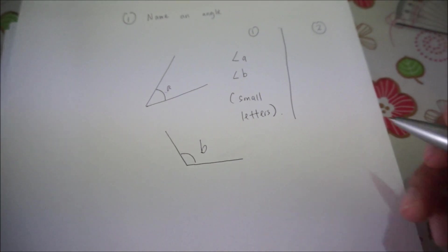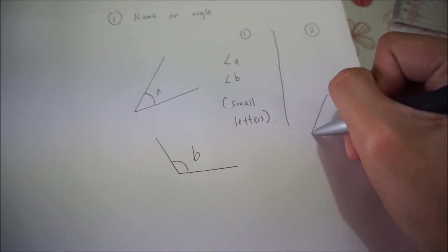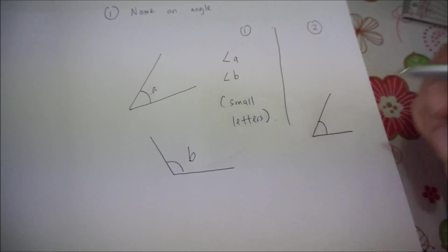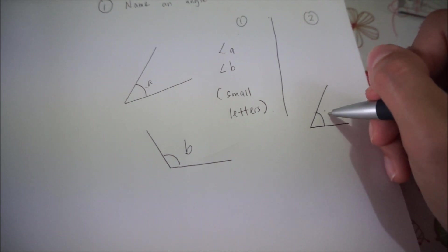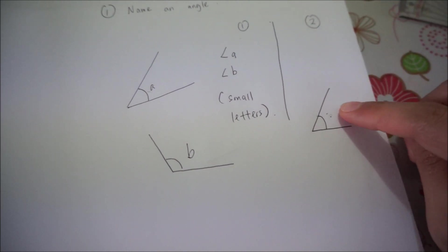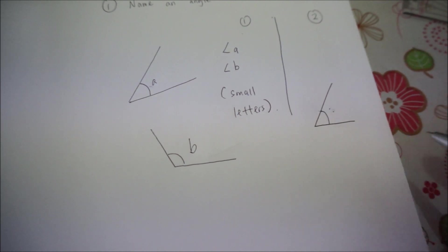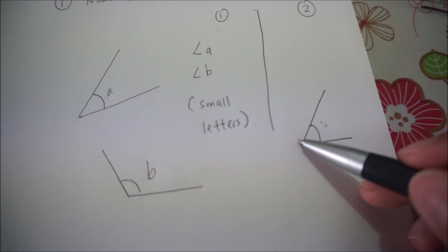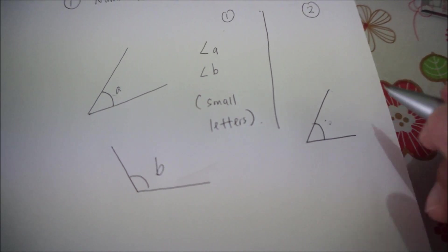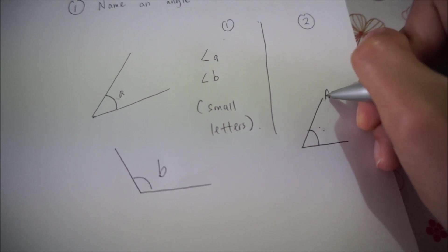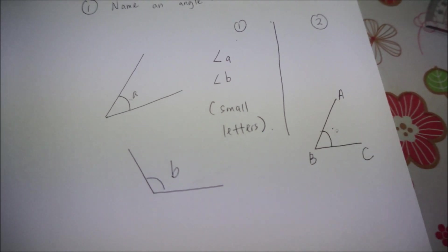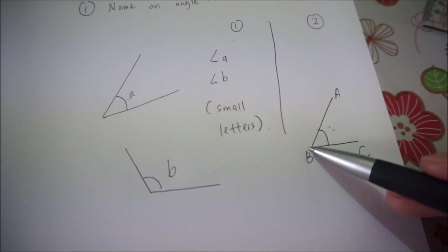The second way of naming angles is like this. For example, again I have two straight lines, and this is the angle. Now instead of naming the angle here, writing a letter A here, I name my angles at my lines. Now I have this line, one line, two lines. Let's call this line capital A, B, and this line B, C. So I have two lines now: line A, B and line B, C.